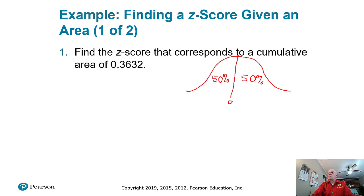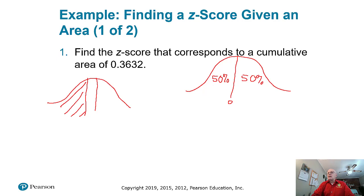Now we want to find the z-score that corresponds to a cumulative area of 0.3632. What is the area 0.3632 going to look like? Cut the curve in half. This part over here is 0.3632 — plus something extra to make this half be 0.5. So we've got this area that isn't even half yet, and we're looking for a z-score right here. Since the z-score is to the left of zero, it's going to be a negative number.